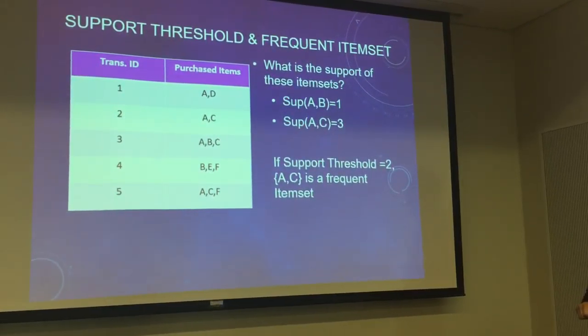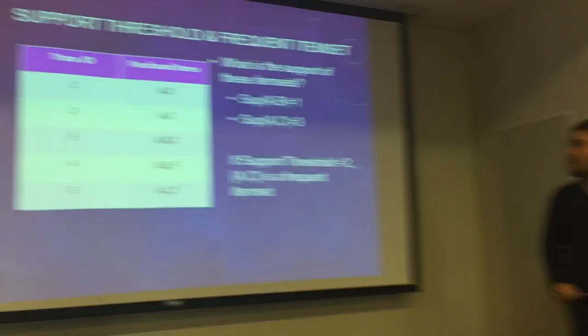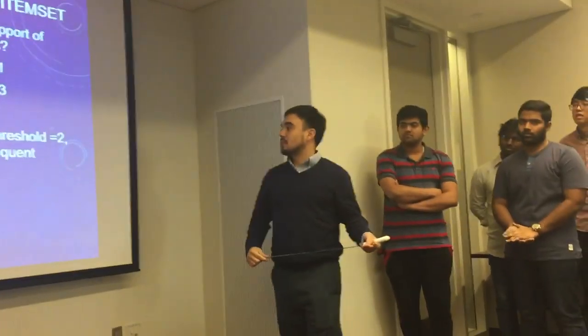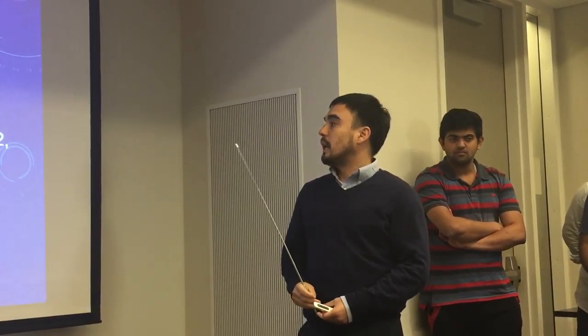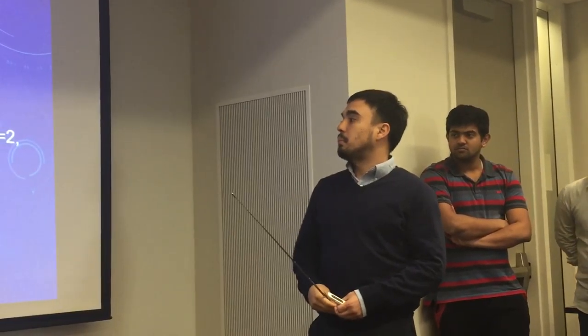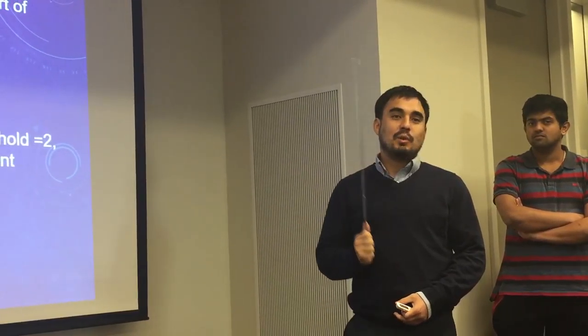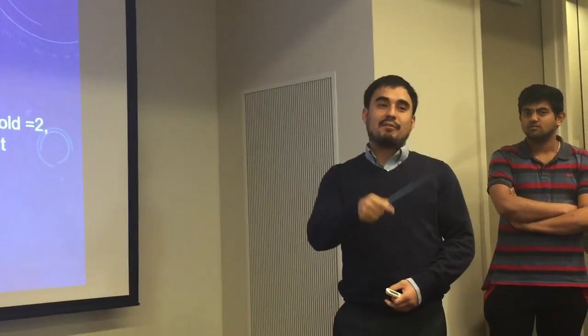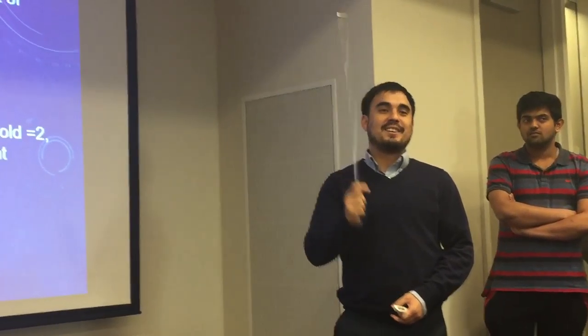My question for you all is: what would be the support of item set B and E? That's for candy — anyone want candy? One. Okay, that half of the room gets candy.